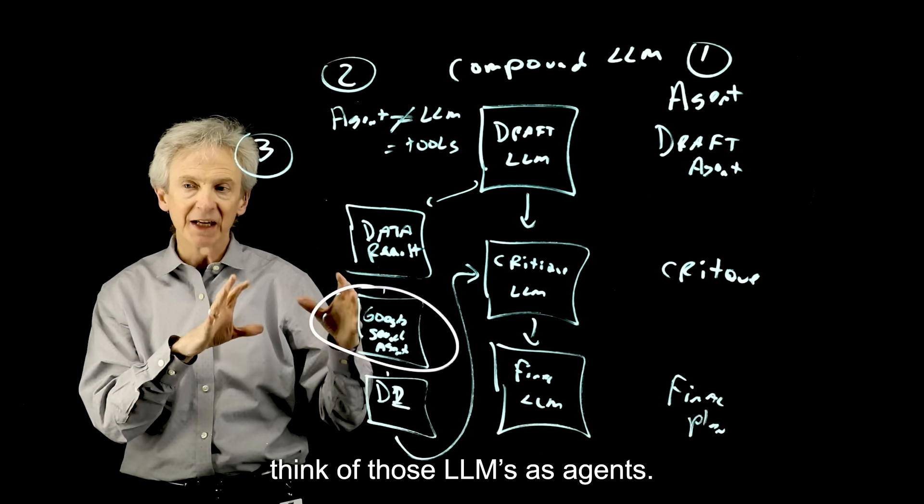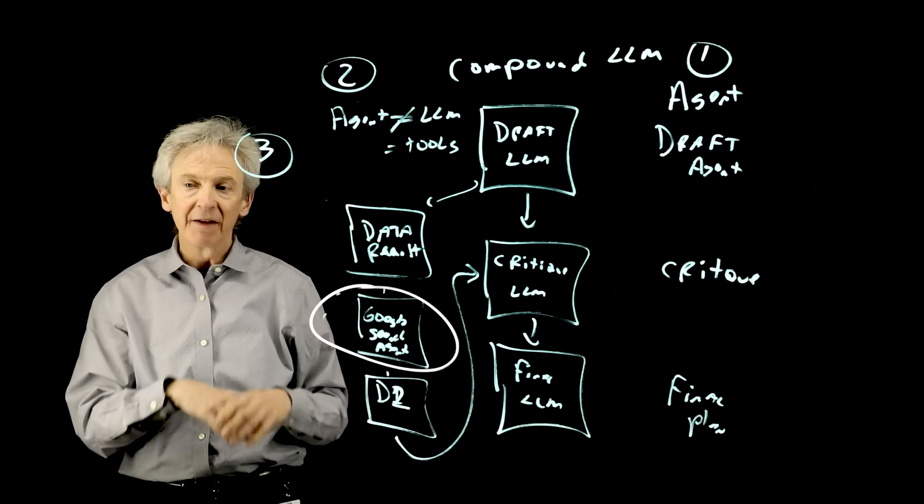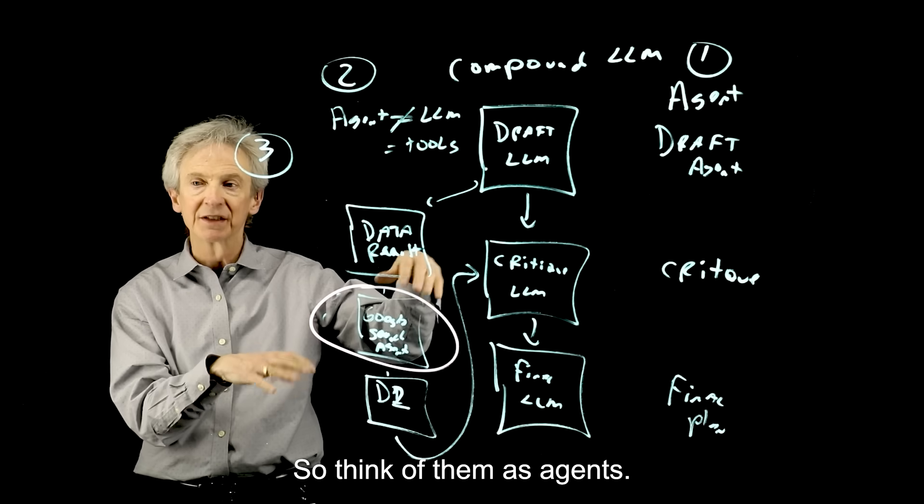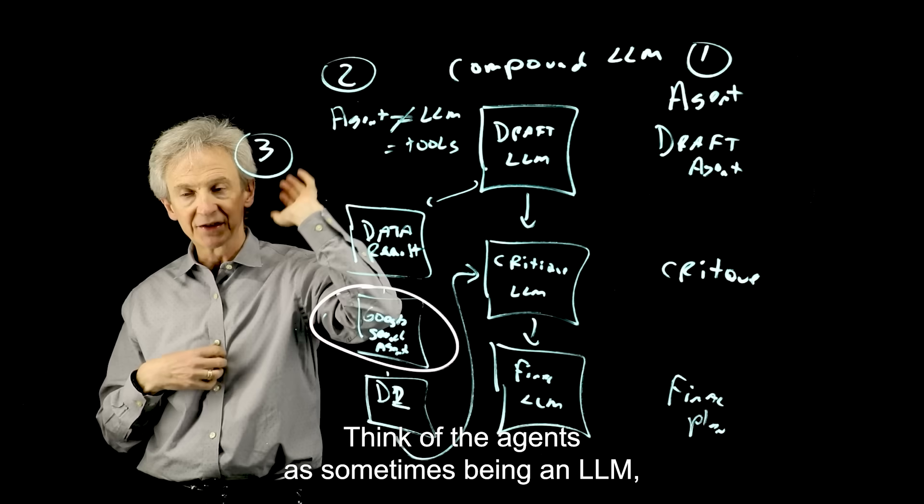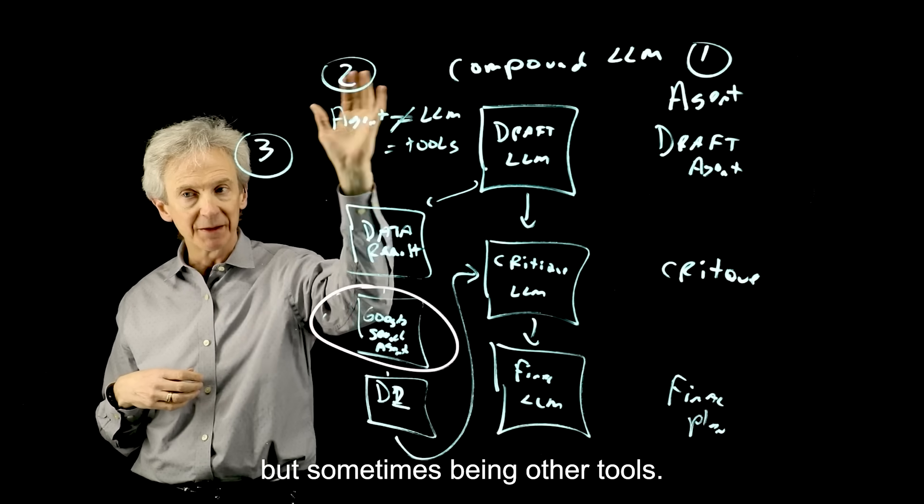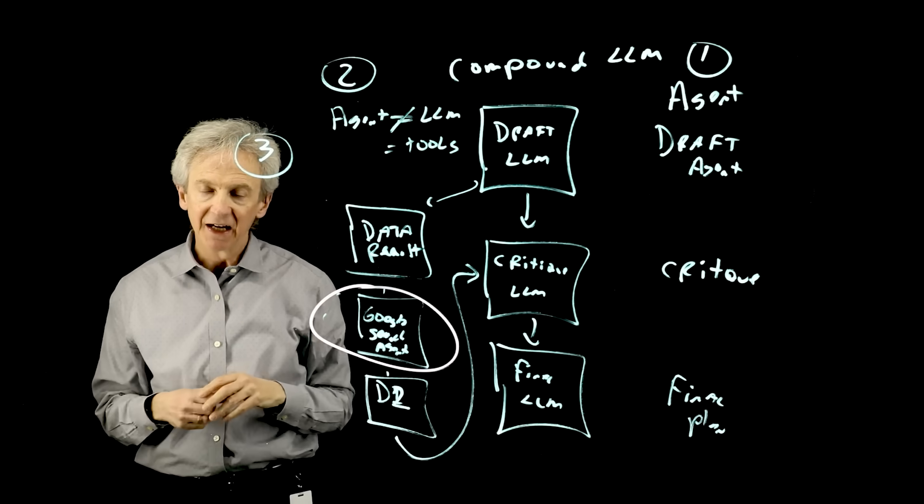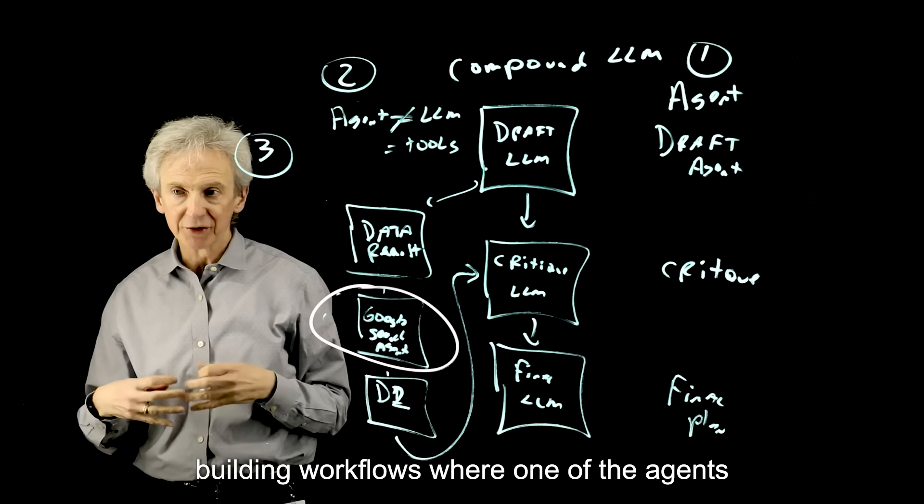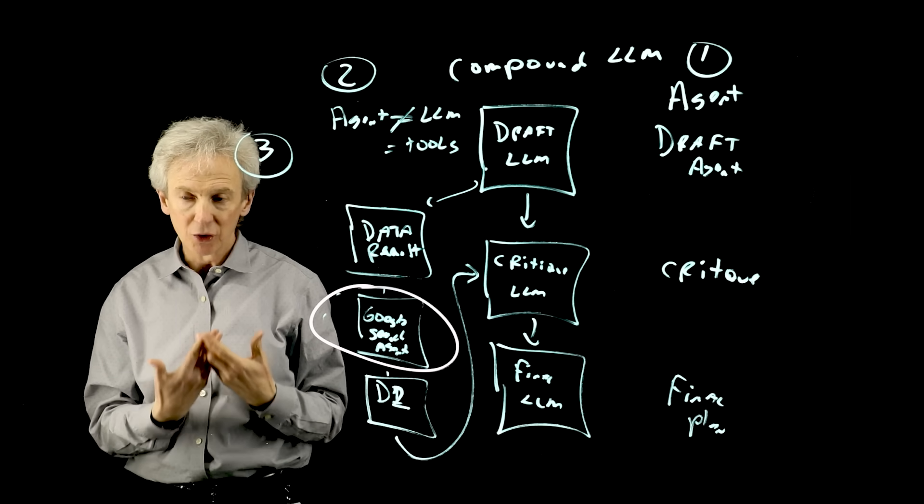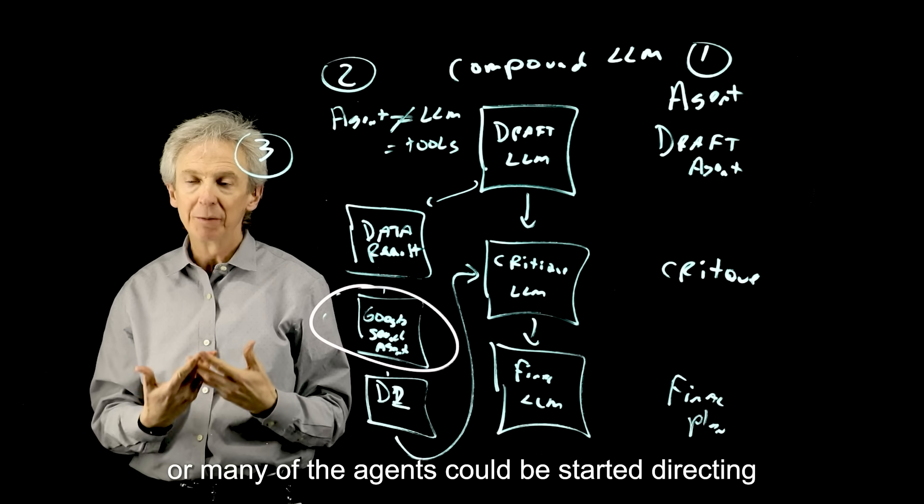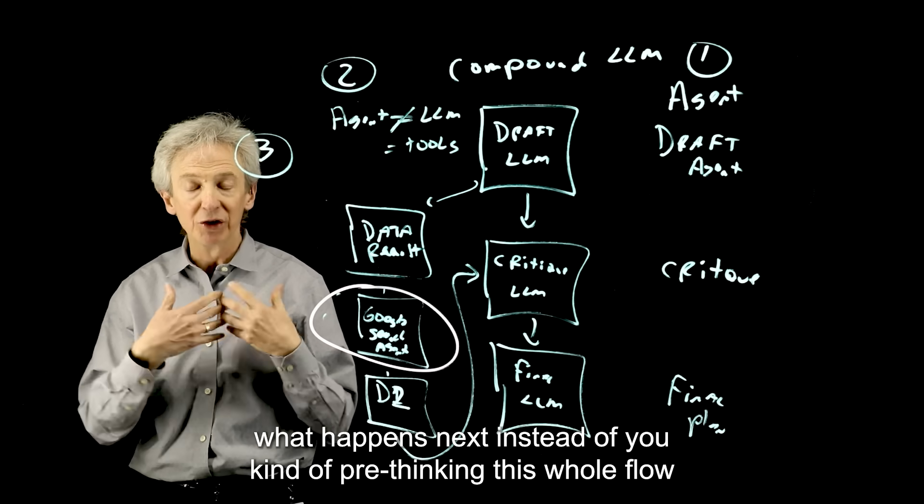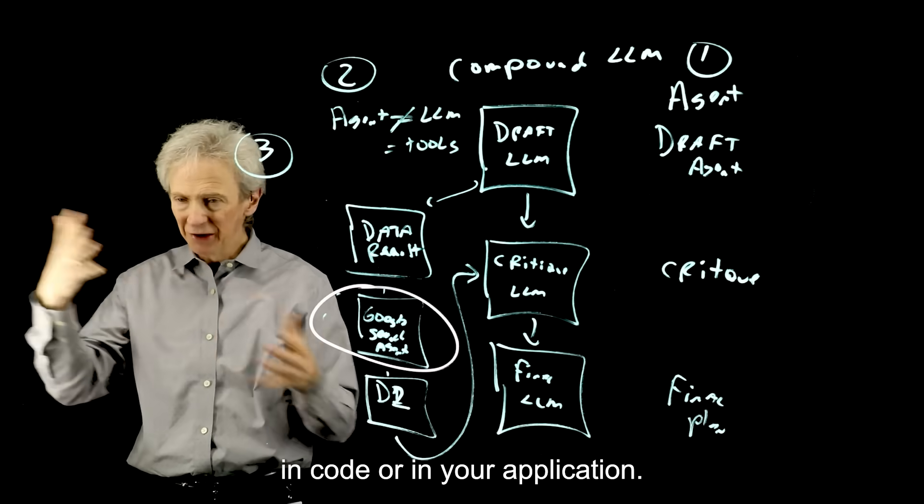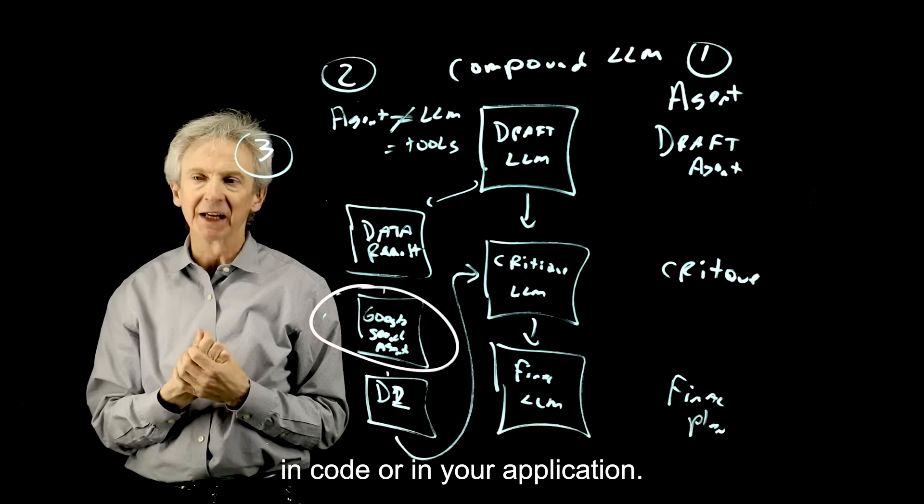Think of those LLMs as agents, and they all don't have to be LLMs. So think of them as agents. Think of the agents as sometimes being an LLM, but sometimes being other tools. And then lastly, imagine building workflows where one of the agents or many of the agents could be sort of directing what happens next instead of you pre-thinking this whole flow in code or in your application.